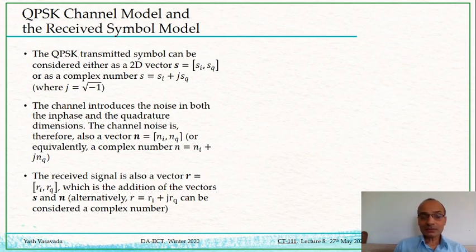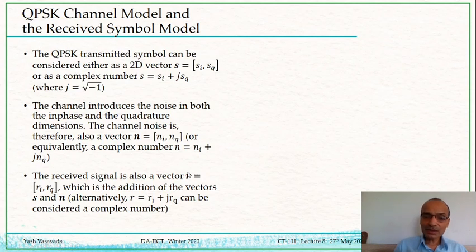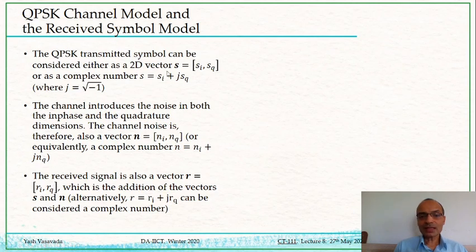The channel introduces noise in both dimensions equally — it doesn't favor one dimension over the other. So the channel noise is also two-dimensional: NI and NQ, or equivalently the complex number NI + j·NQ. The received signal R can be thought of as a vector (RI, RQ) which is the addition of vectors S and N, or in complex notation, R = S + N.